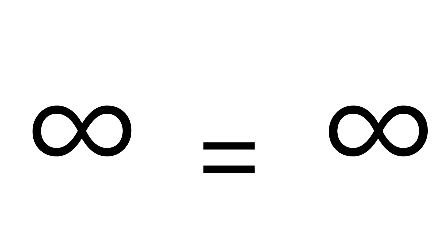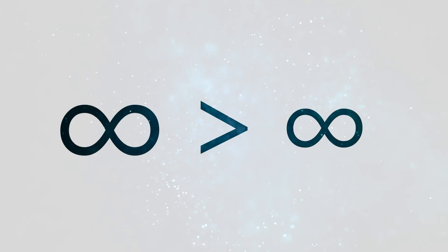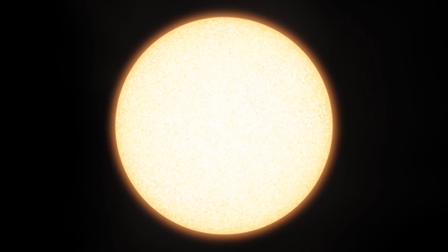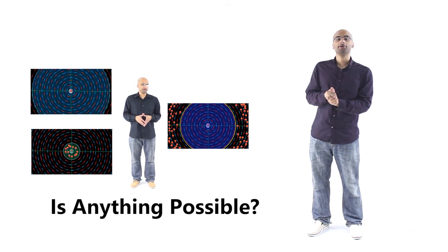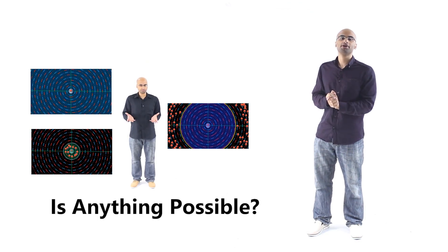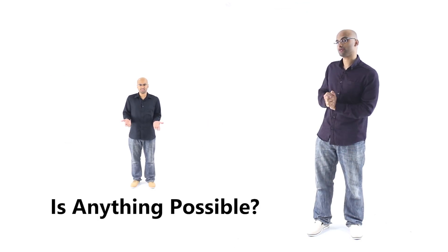Another apparent paradox is the notion that in an infinite universe, everything seems to equal everything else — the number of galaxies seems to equal the number of stars, which seems to equal the number of planets, which seems to equal the number of fundamental particles, because they are all infinite and infinity equals infinity. However, if you think of infinities as sets, there is nothing preventing you from saying that the infinite number of fundamental particles is in fact more than the infinite number of stars, because stars are always made up of fundamental particles. If you are interested in more of these paradoxes, I highly suggest watching the video 'Is Anything Possible?'